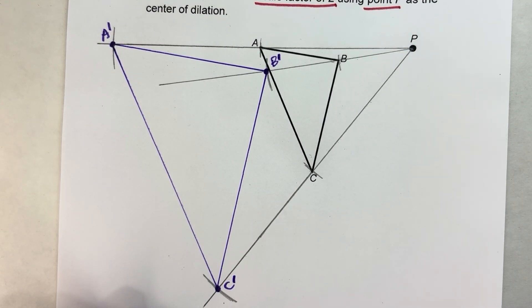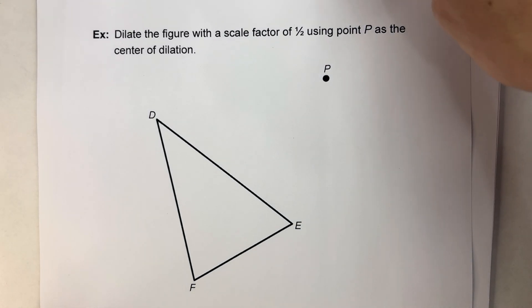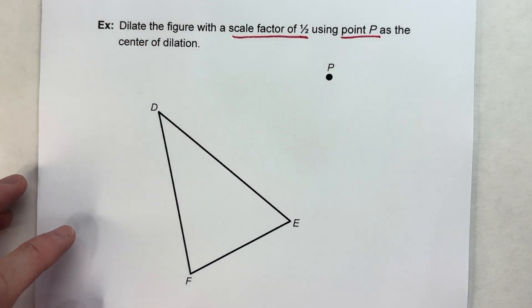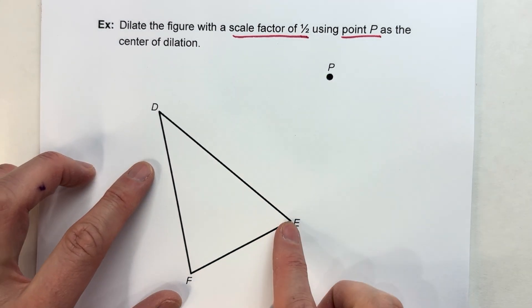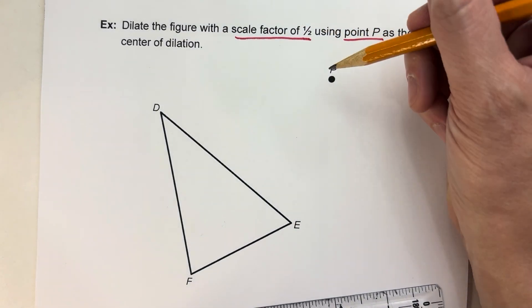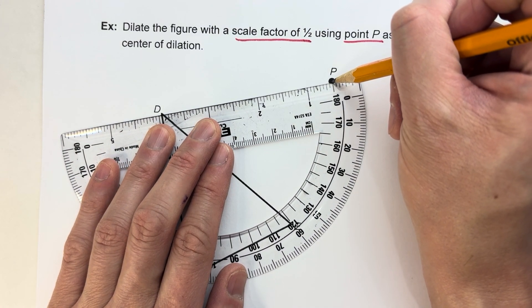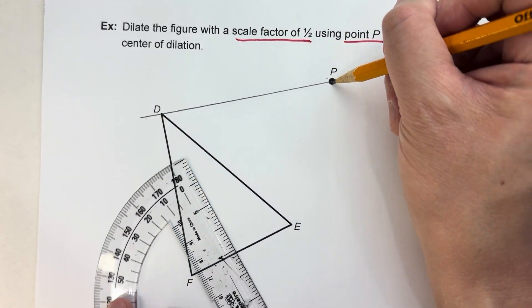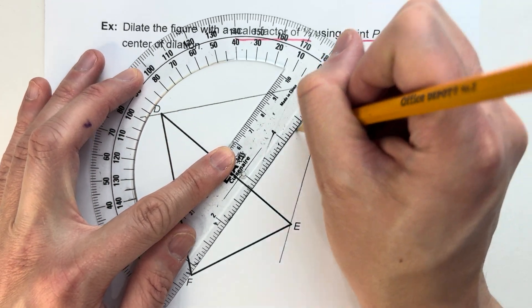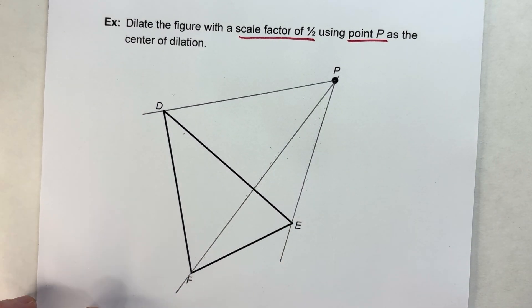Let's do one where the shape actually gets smaller though. So here I've got a second example. It says dilate the figure with a scale factor of one half this time using point P as our center. This time it's going to shrink and it's going to get closer to P and all the sides are going to get half as small. And it turns out we follow the same general strategy. From each vertex of my triangle, I'm going to draw its path towards P. So here's D, here's E, and here's F. And notice I don't have to draw the lines as long this time because it's going to get closer to P, not further away.